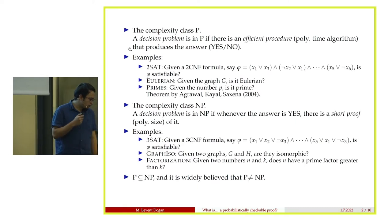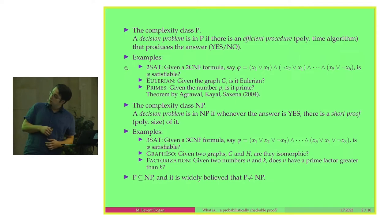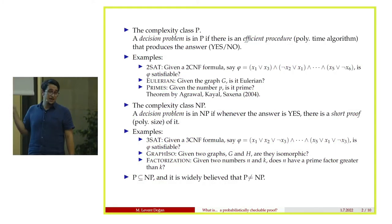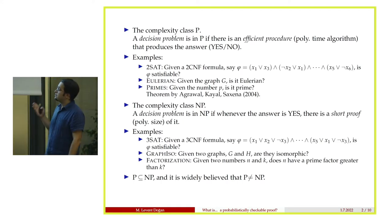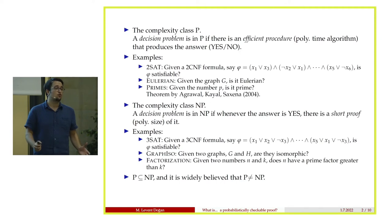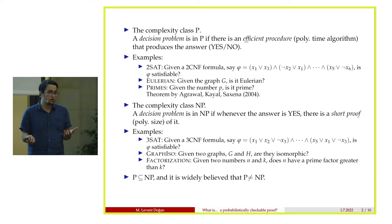Before moving on, let's mention co-NP. In the definition of NP, whenever the answer is yes there should be a short proof. In co-NP, we require that whenever the answer is no, there is a short proof. It is widely believed that NP is not equal to co-NP. For example, it is easy to prove two graphs are isomorphic — just give the isomorphism. But how do you prove two graphs are NOT isomorphic? We don't know. Graph isomorphism is in NP, but whether it is also in co-NP, we don't know.